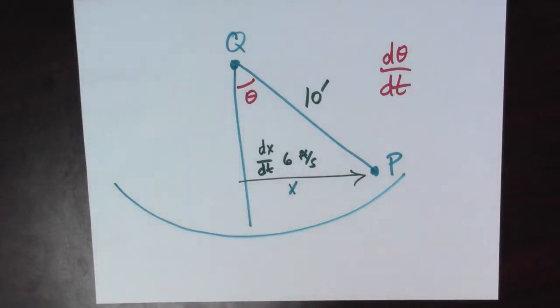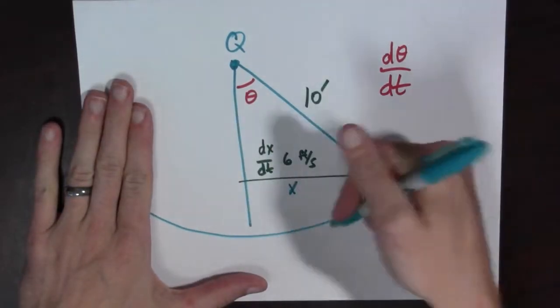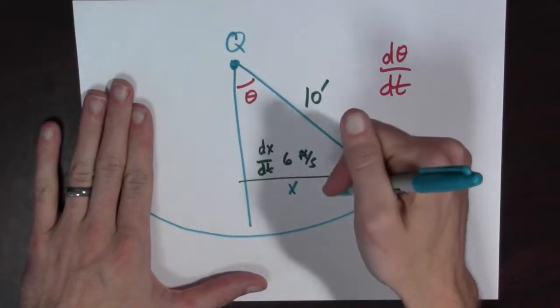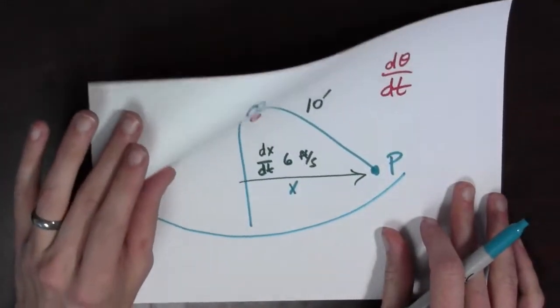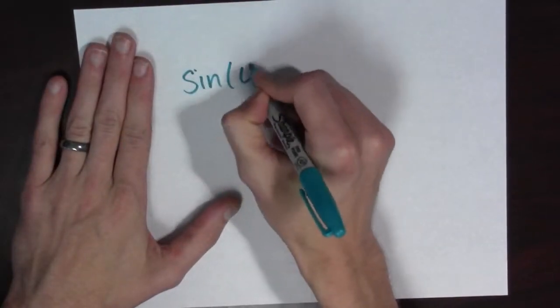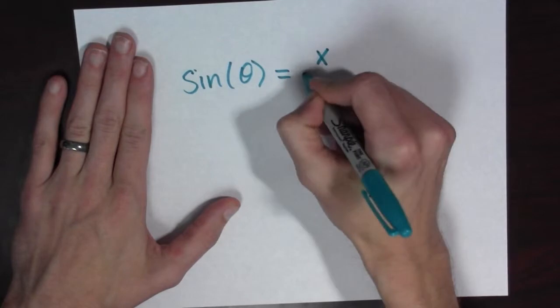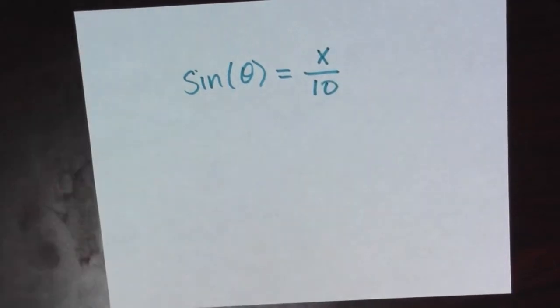It looks like I can easily compute sine of theta because sine of theta is going to be x over ten. So that's, I think that will be my equation. Let's see what happens. I'll write sine theta equals x over ten.